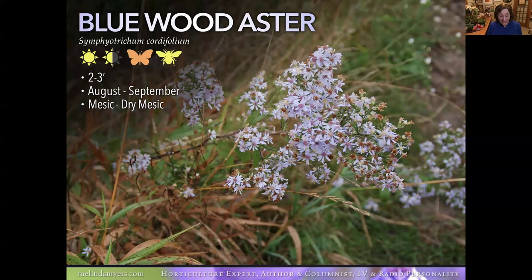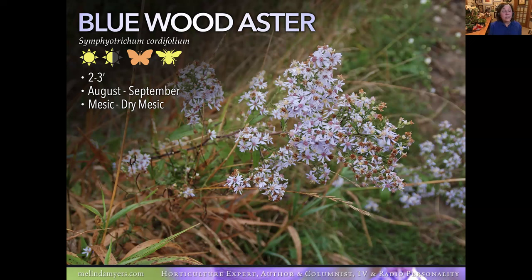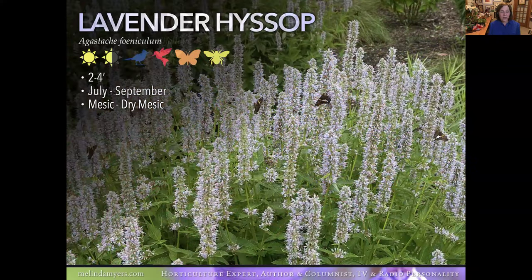Blue Wood Aster can be somewhat aggressive because of the seed set — all the asters tend to do a little spreading when happy. It's a late summer into fall bloomer, and this one will take a little shade, whereas most asters like full sun. When you see 'mesic' it means moist; 'dry mesic' means good drainage to drier soil. Those mesic prairie plants subject to moist and dry conditions are why many are perfect for rain gardens. It reseeds readily, so consider deadheading if you're getting overrun, though I like to leave seed heads for winter interest and wildlife.